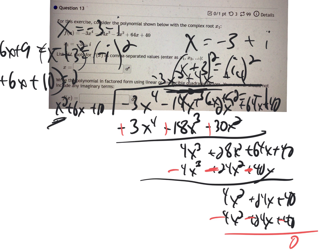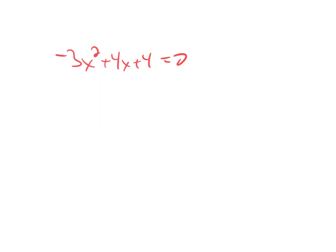So what did I get for a dividend? Negative 3x to the second plus 4x plus 4. So now I'm going to take this part and set it equal to 0. And I'm going to get rid of the negative by changing all the signs. So 3x squared minus 4x minus 4 equals 0. And I don't know, is that going to factor? I suspect not. I really don't want to take the time to try to figure that out. So I'm just going to use a quadratic formula. I don't see it off the top of my head.